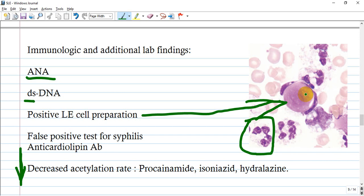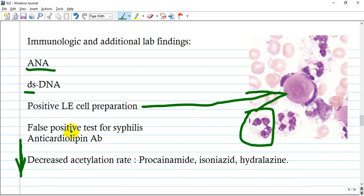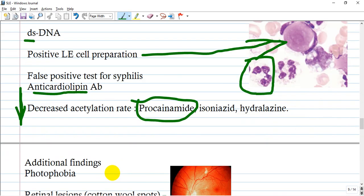Also, the patient can have a false positive test for syphilis due to anti-cardiolipin antibodies. We can also detect decreased acetylation rate. What does this mean? Patients taking procainamide, isoniazid, or hydralazine have a chance of developing drug-induced lupus because if they have decreased acetylation, which is a required reaction for metabolizing these drugs.